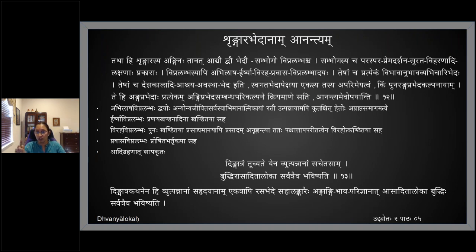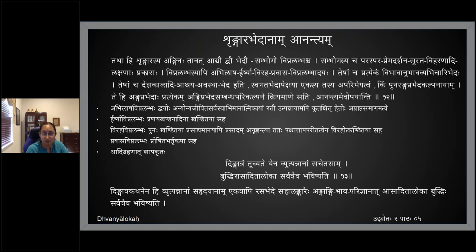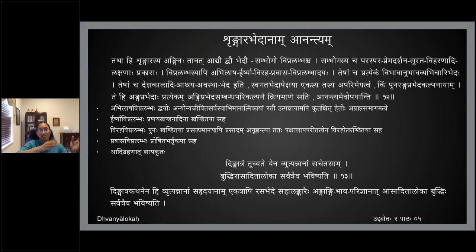If we have to consider all nine rasas — he takes just one example of shringara. Shringara rasa can be divided into samboga shringara and vipralambha shringara. Sambogam is love in union and vipralambha is love in separation. Sambogasya paraspara premadarshana — the way they show their love to each other — this can be in many varieties. Surata is the union — the interaction between the nayaka and naika. If you take Kama shastra, there are different types of alinganam, chumbanam, nakachetam — so if you take each and every variety, it's going to be ananta.